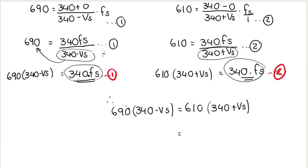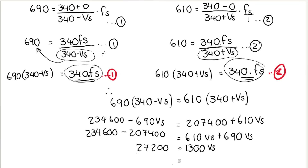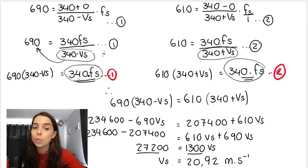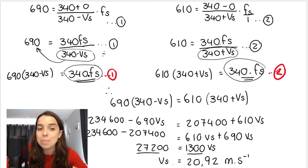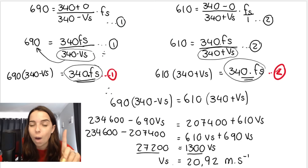Distribute and treat VS like an X. 690 times negative VS is negative 690 VS. Collect all VS terms on one side, then divide to solve. We get VS equals 20.92 meters per second. If you prefer a different method of solving simultaneous equations, feel free to use it. Remember, all that algebra to get the final answer is worth just one mark.